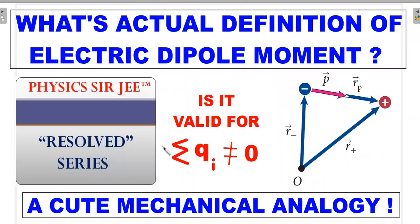Welcome back to the channel Physics RG. In this Result Series video, I've brought forward a topic generally not touched upon in textbooks: the actual definition of electric dipole moment, which is valid even for systems where the net charge is not zero. We'll also cover a mechanical analogy from rotational mechanics and finish with a practice problem — and our next video will be the solution to that problem.